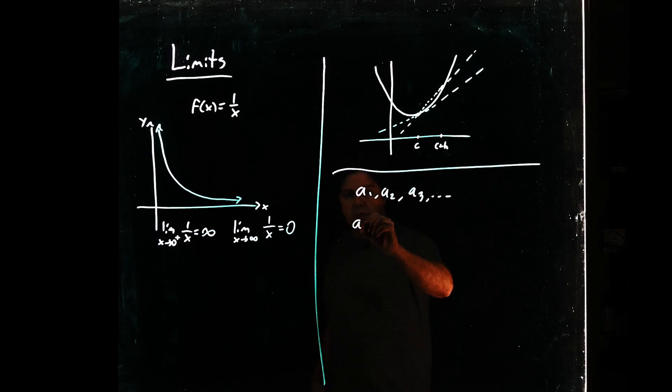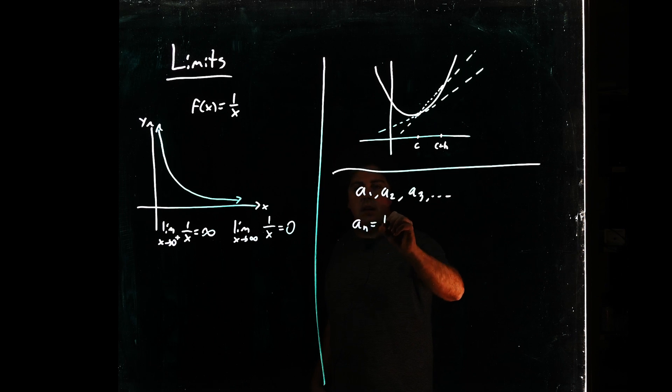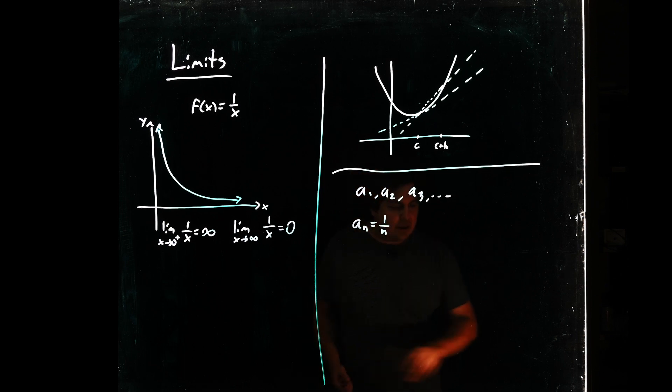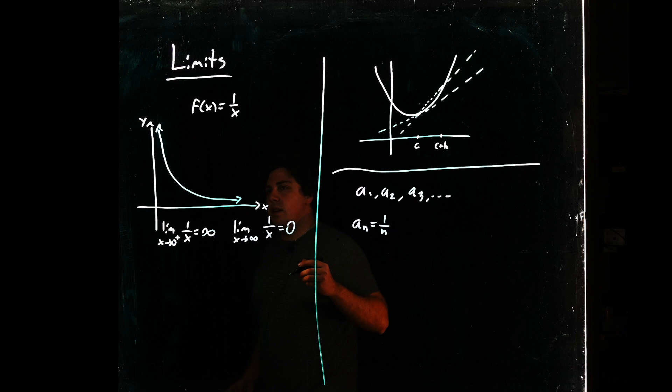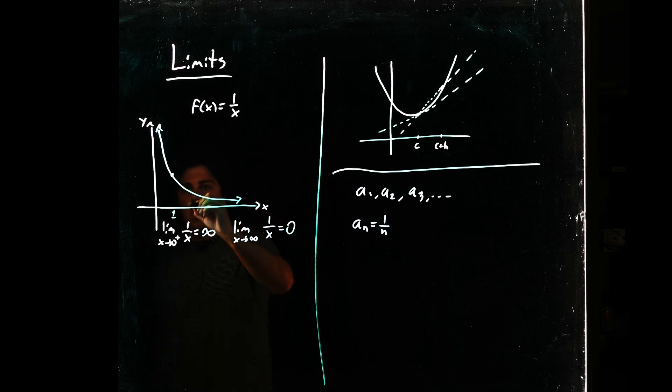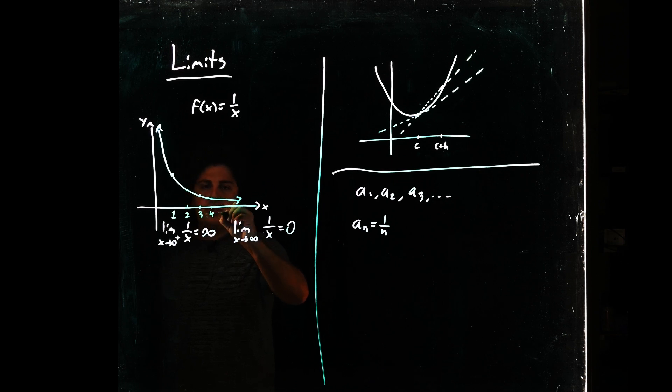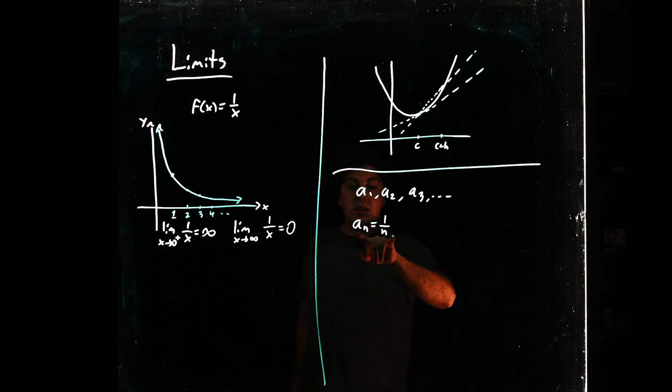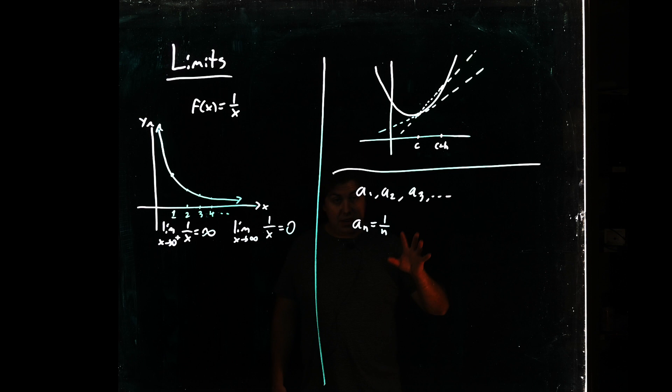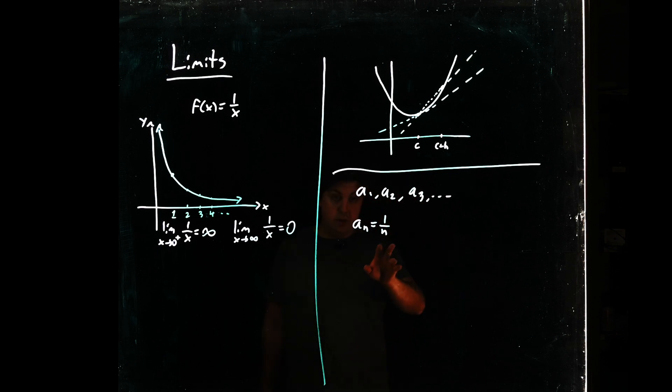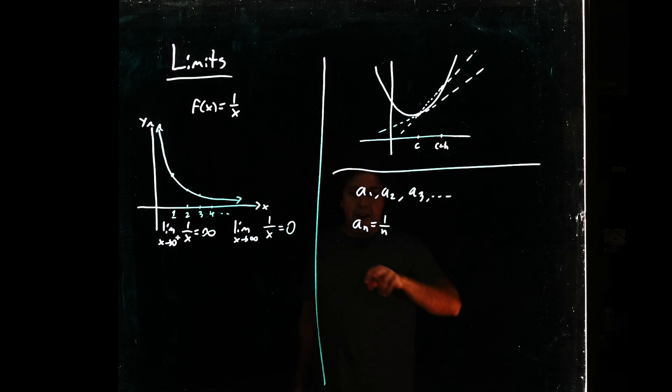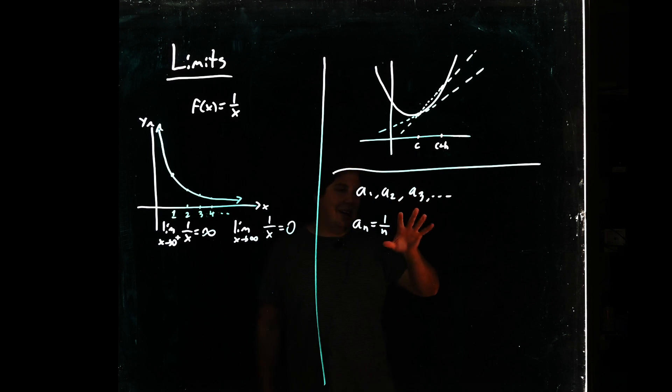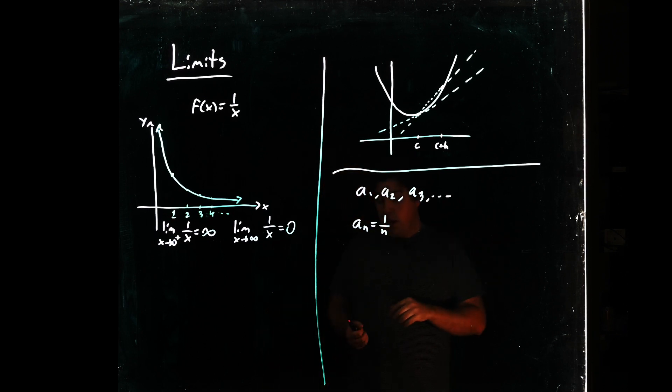So as a quick example, if your sequence a_n is 1 over n, that is to say what the sequence is, is it's just these points at 1 and 2 and 3 and 4 and so on on this function, you might expect that these guys are going to get very small and are going to go to zero. Because what's happening is as you plug huge numbers into little n, 1 over little n is going to become very small and it's going to go to zero.